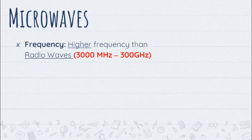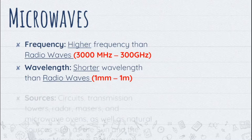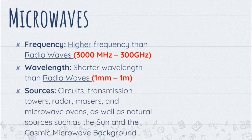The next EM wave that we are going to discuss is microwaves. In terms of frequency, it has higher frequency than radio waves. In terms of wavelength, it has shorter wavelength than radio waves. Some sources of microwaves are circuits, transmission towers, radar, masers, and microwave ovens, as well as natural sources such as the sun and the cosmic microwave background.